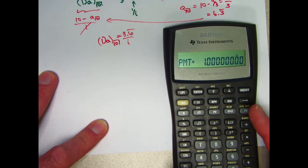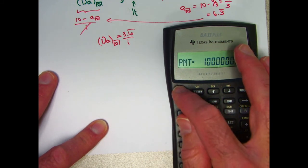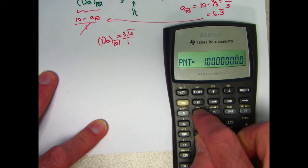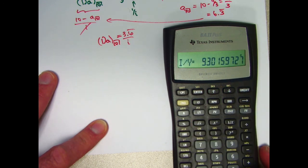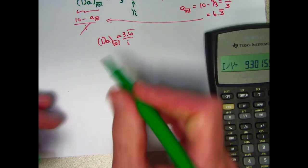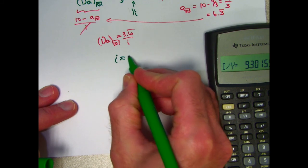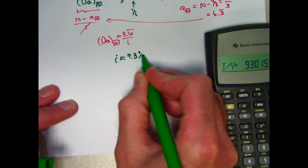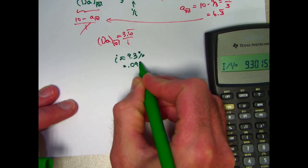And now you're ready to calculate the interest rate. CPT stands for compute. i slash Y, interest rate per year. About 9.3%. And again, that is given as a percent. i then is about 9.3%, or as a decimal 0.093. I can now plug that into here to get the final answer.